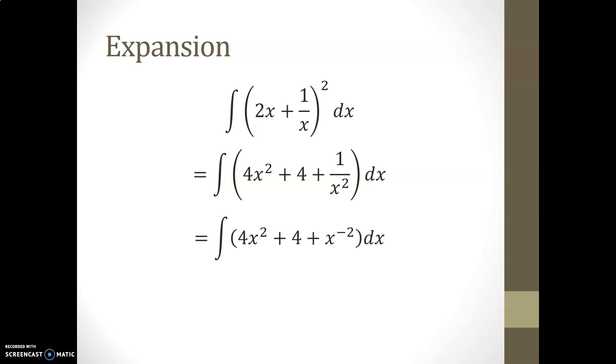However, for the last term rewriting 1 over x squared as x to the minus 2 in order to apply the power rule may be a wise idea. As for the other terms, x squared antidifferentiated will become x to the power 3 over 3. The antiderivative of 4 is 4 times x and the antiderivative of x to the minus 2 by applying the power rule is x to the minus 1 over minus 1, which we can then rewrite in fractional form.